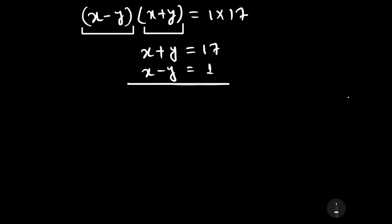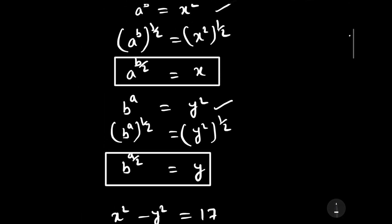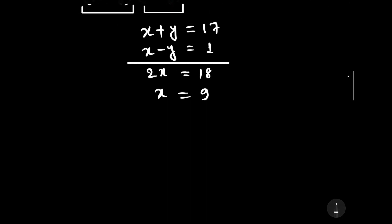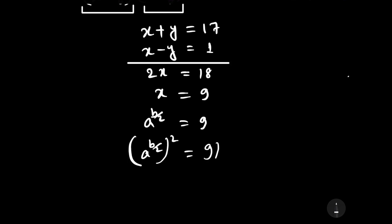By solving these two equations we will have 2x equal to 18, so x is equal to 9. The value of x was a to the power b by 2, therefore a to the power b by 2 is equal to 9. Squaring both sides, a to the power b is equal to 81.